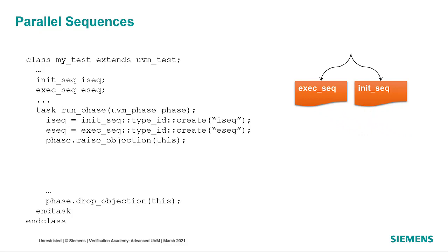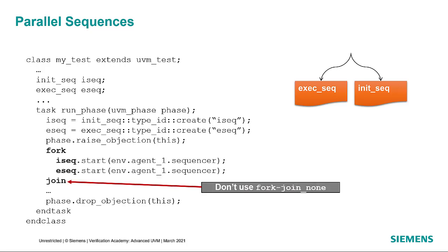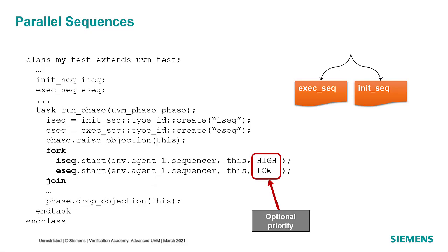We can also run sequences in parallel. We create both sequences from the factory and raise the objection, but instead of calling start sequentially we put the start calls in a fork-join block. Notice we don't use fork-join_none, because then we'd need some other mechanism to wait for completion before dropping the objection and ending the test. When you start sequences in parallel, you can specify an optional priority. Since there's only one driver connected to the sequencer, it needs to pick one of the two transactions to respond to, and it will use the priority to determine which one to provide to the driver depending on the arbitration scheme chosen.